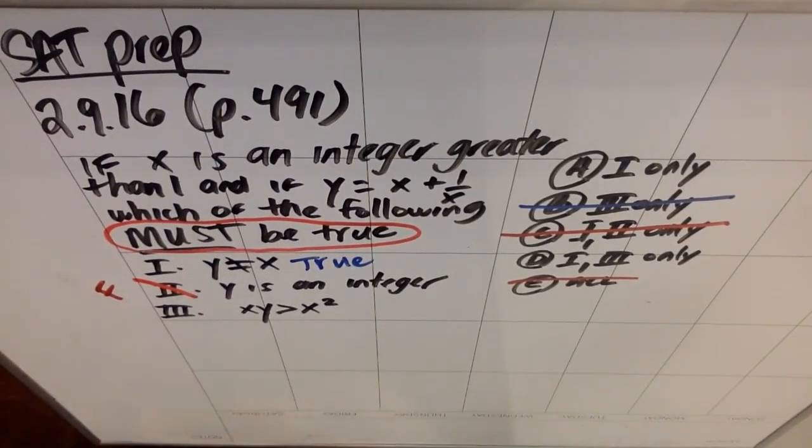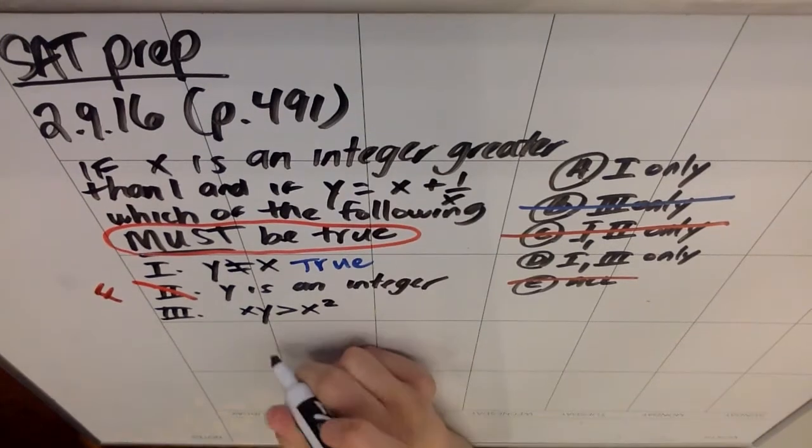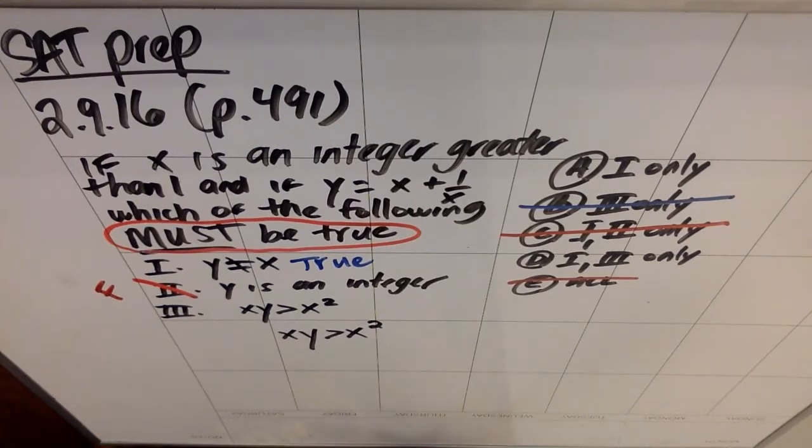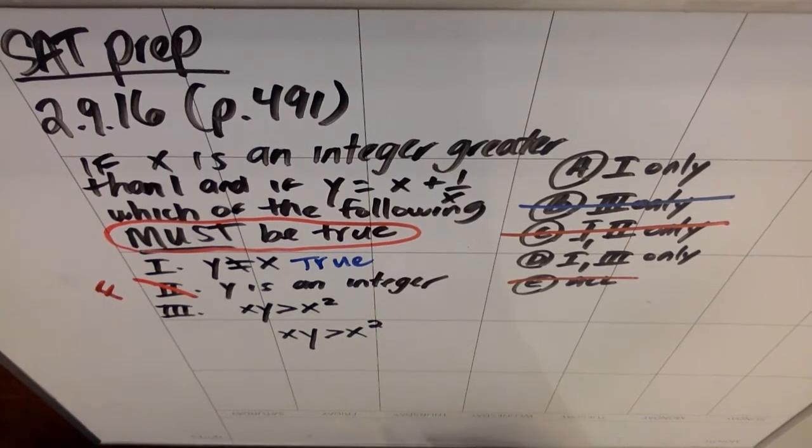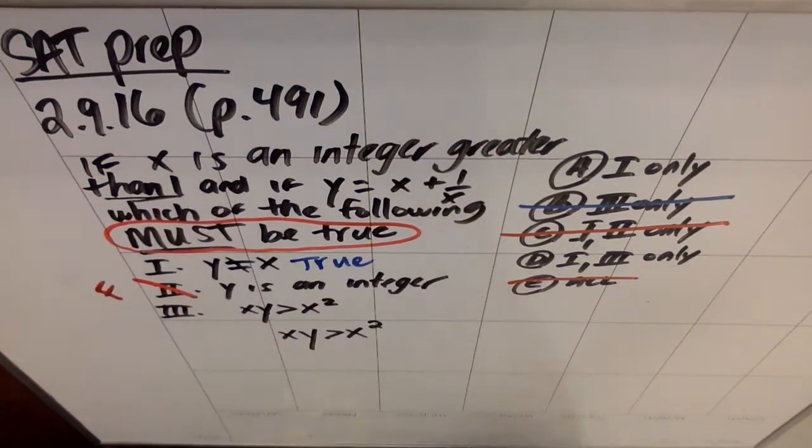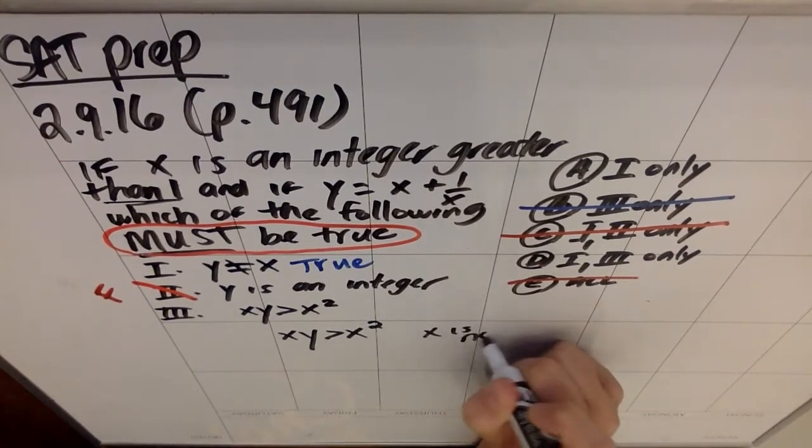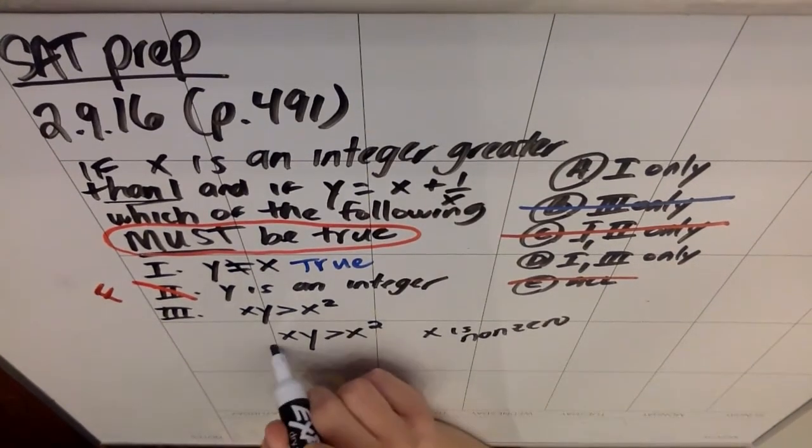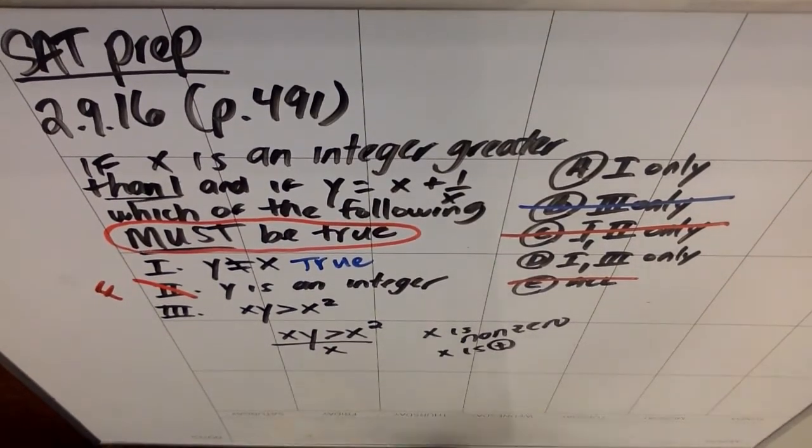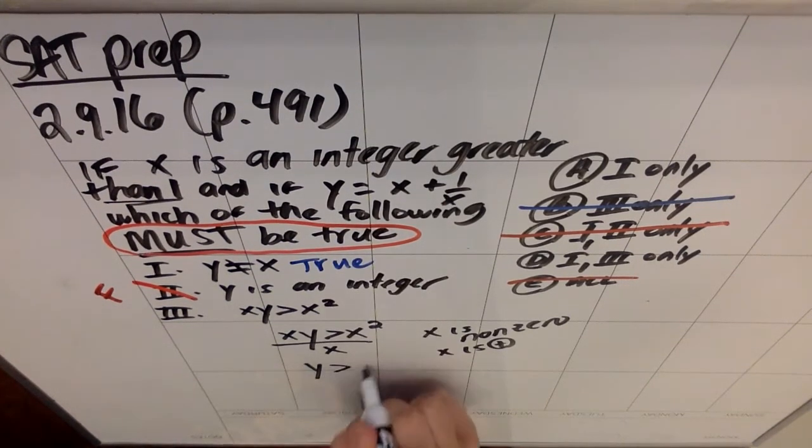So if I were to look at three, which says xy is greater than x squared. If I wanted, I could divide both sides by x. Now normally, I would tell you you are not allowed to do that. The reason I would tell you you can't divide both sides by x is because x could be zero and you're losing the answer where x equals zero. But because they went out of their way to say that x is an integer greater than one, I know that x is non-zero, which means I can go ahead and divide both sides of this by x. Not only is it non-zero, x is positive because it's bigger than one. So when I divide by x, I don't have to worry about flipping the direction of the inequality sign. So I get y is bigger than x.